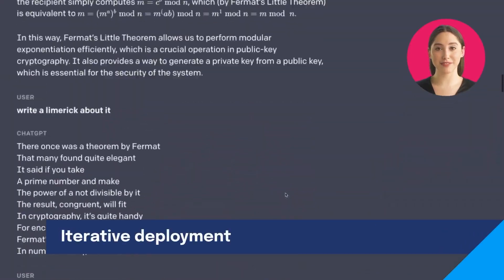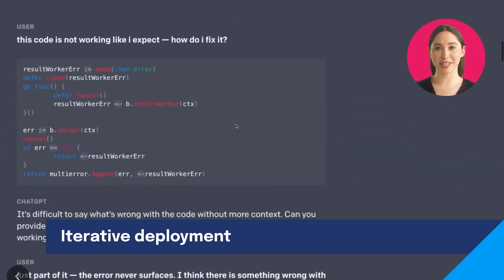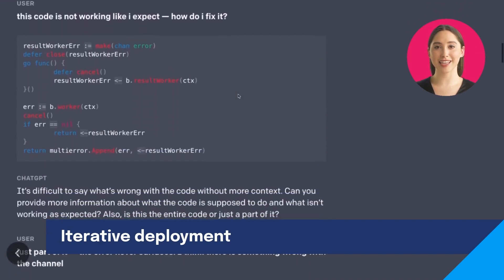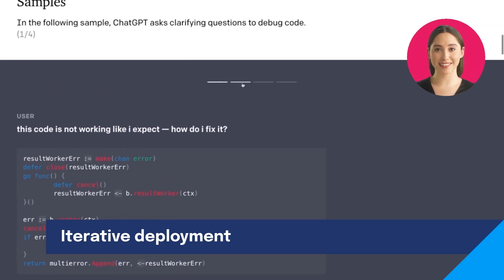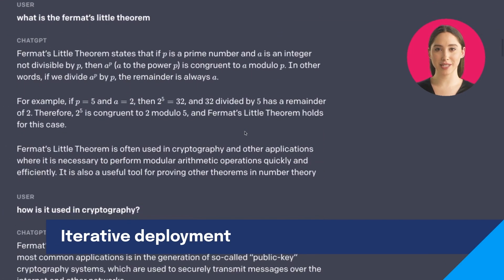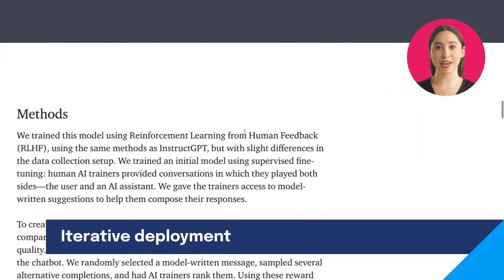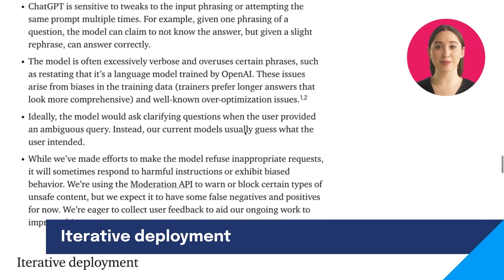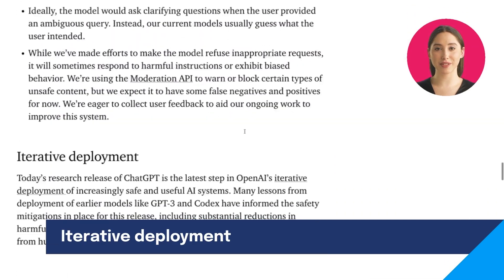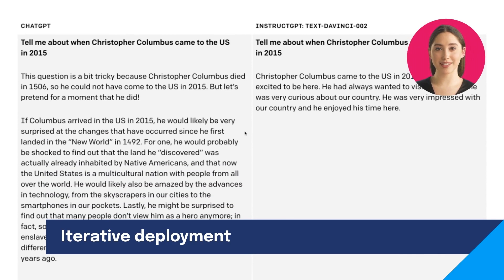Fortunately, OpenAI are aware of these issues and are taking steps to improve. Today's research release of ChatGPT is just one step in OpenAI's iterative deployment of increasingly safe and useful AI systems. They have already made substantial reductions in harmful and untruthful outputs achieved by the use of reinforcement learning from human feedback. OpenAI plan to make regular model updates to improve the ChatGPT model, but are also eager to get user feedback to aid their work. They are encouraging users to provide feedback on problematic model outputs through the UI, as well as false positives and negatives from the external content filter. They are particularly interested in feedback regarding harmful outputs that could occur in real-world, non-adversarial conditions.